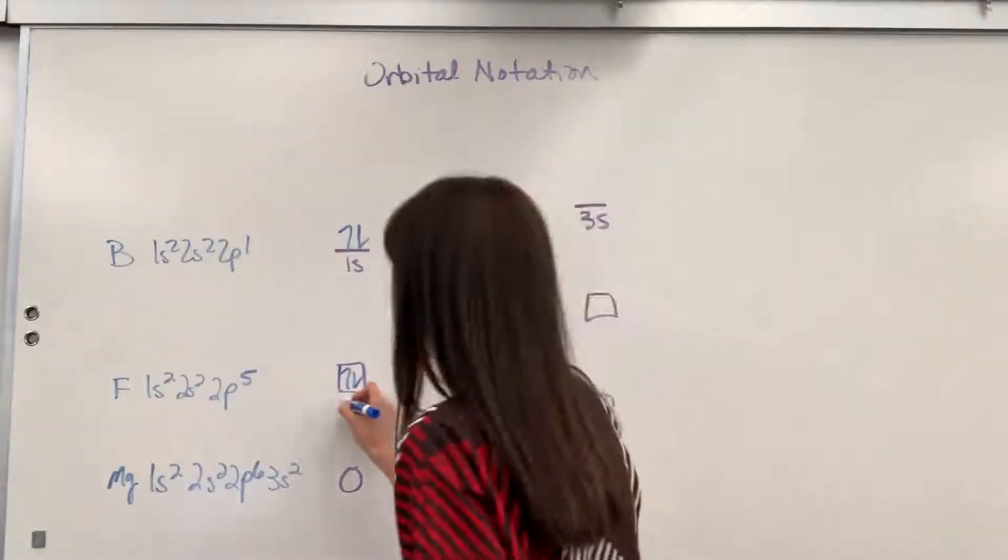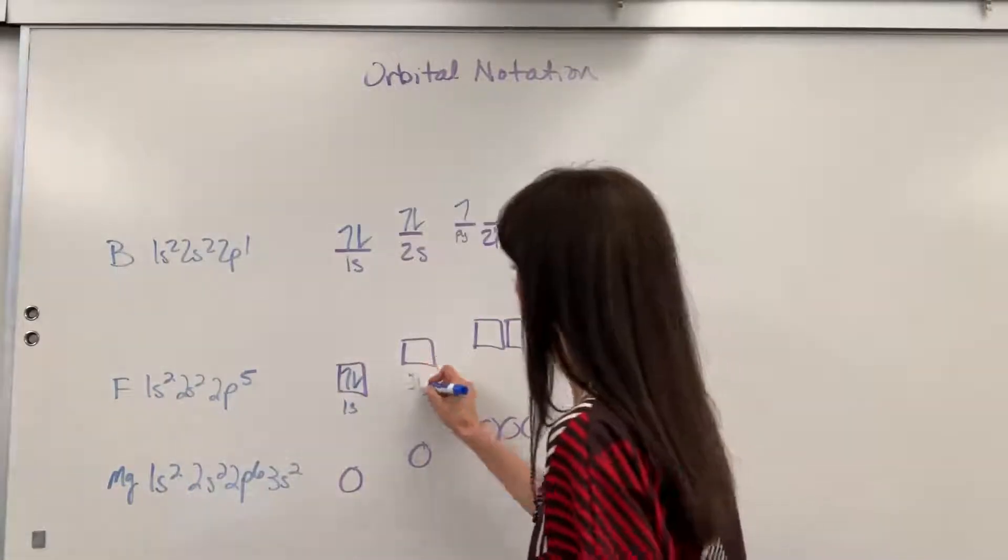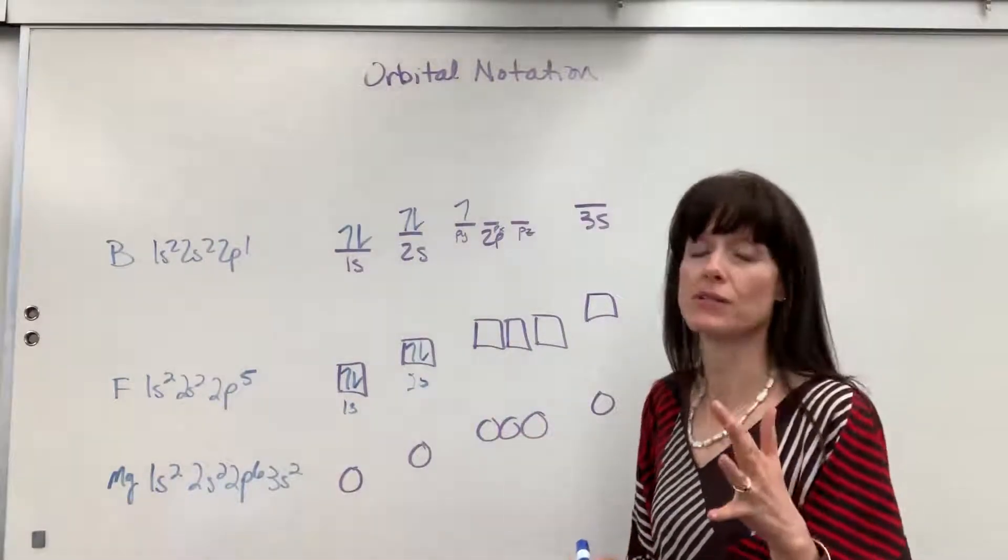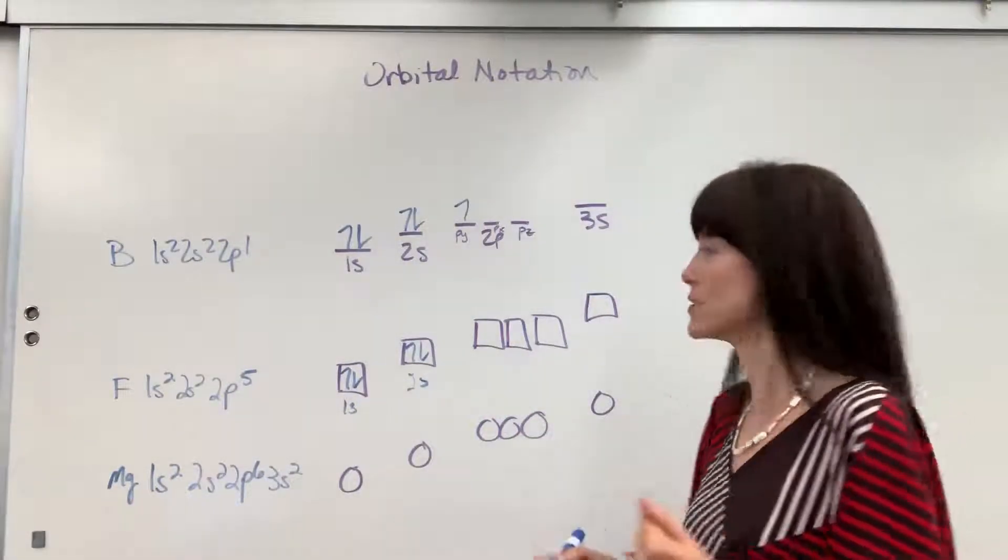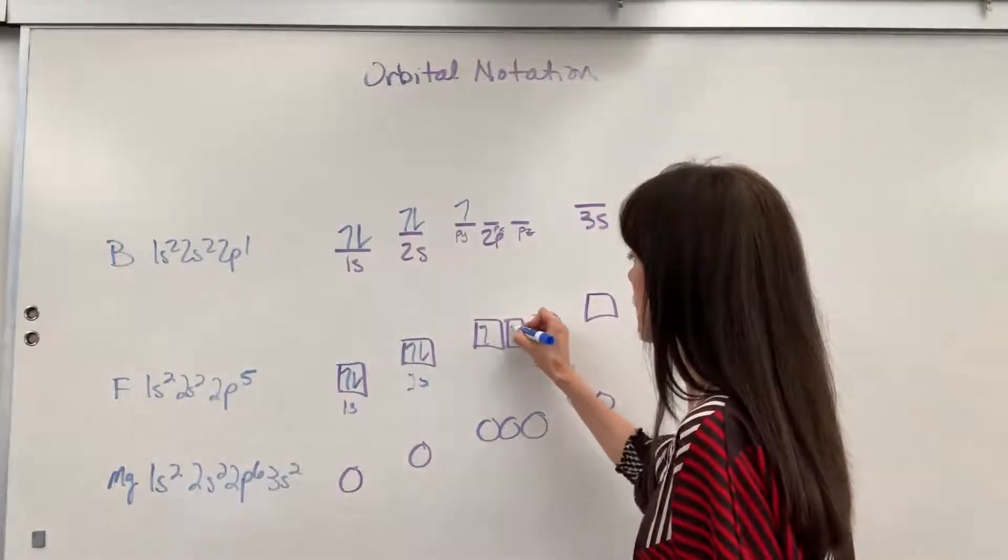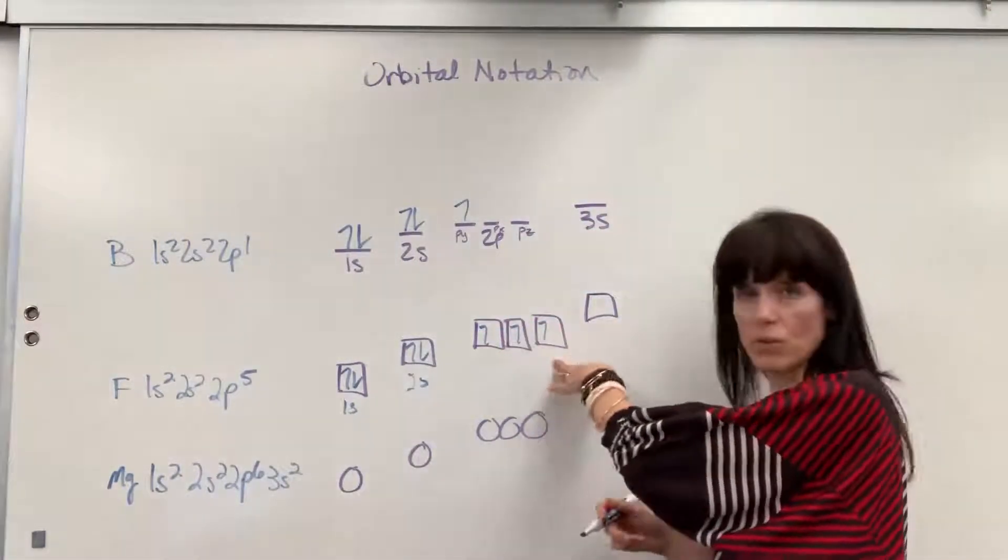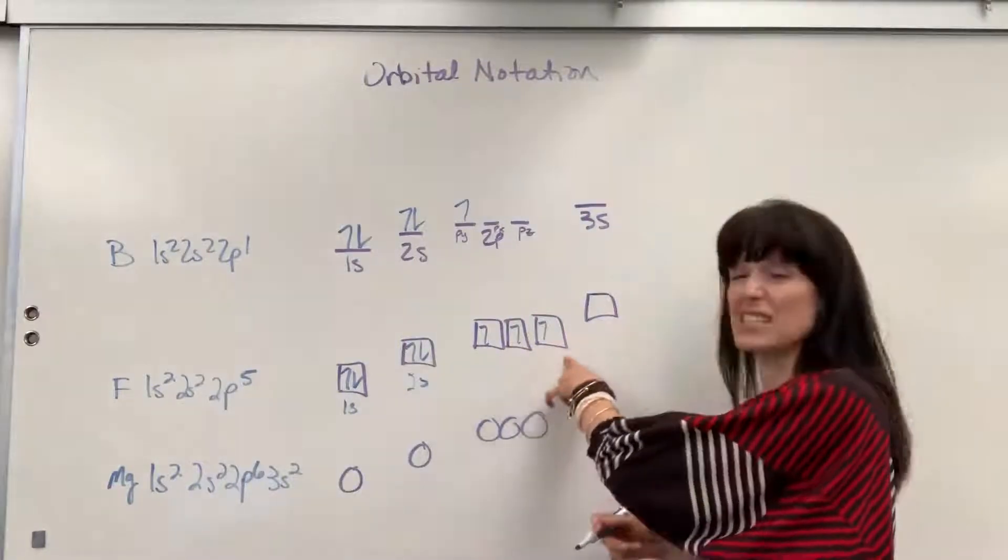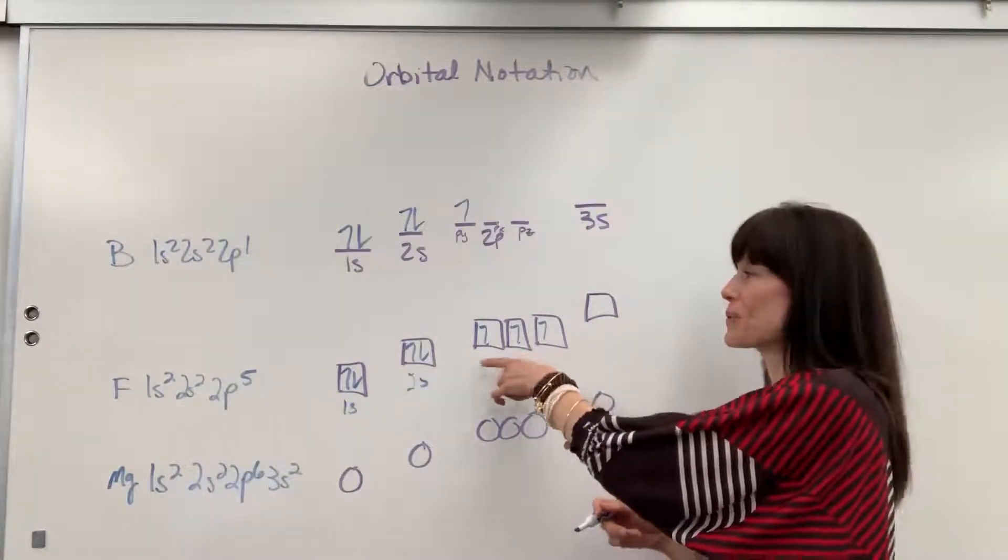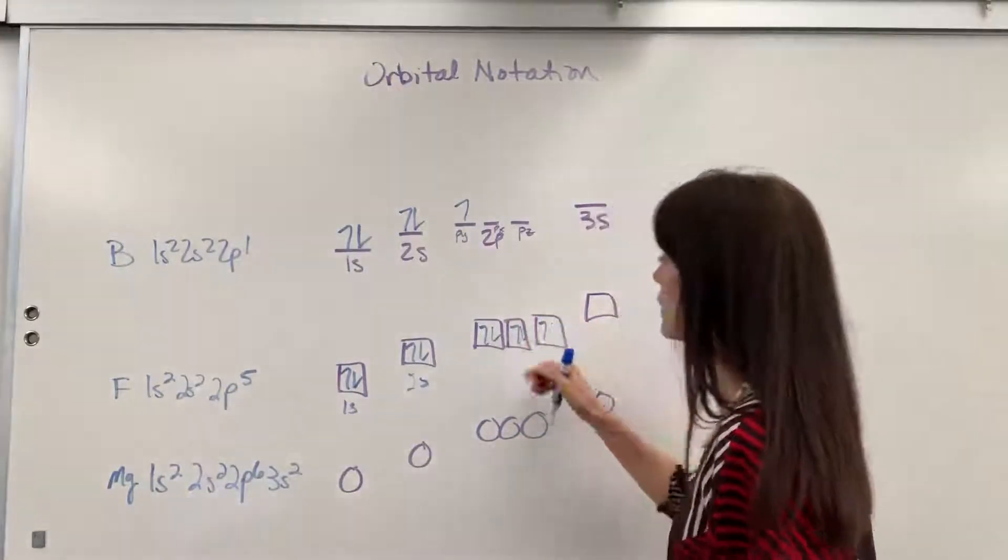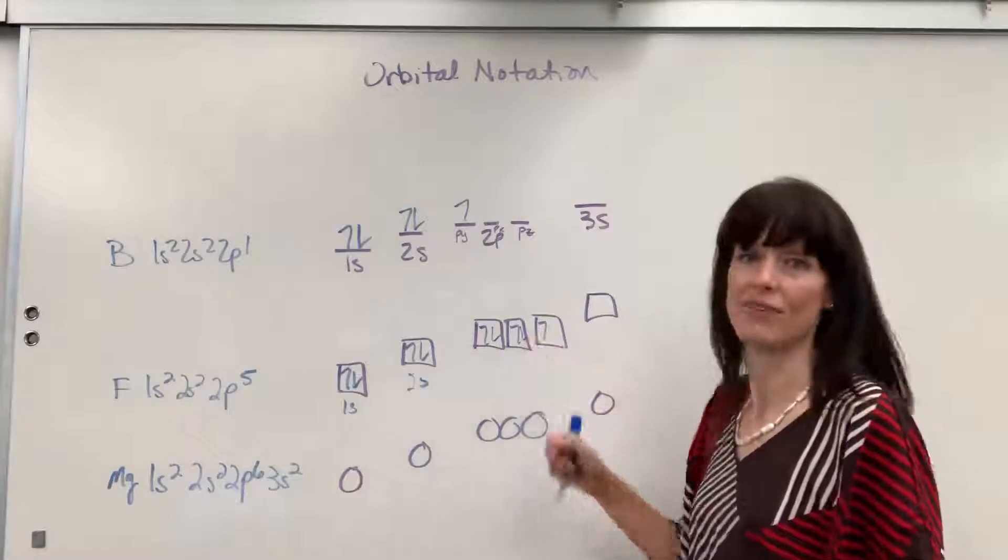Okay, so 1s, then we've got their up and down spin. 2s, two electrons, up and down. And then we've got five electrons. So I'm going to be really careful to follow Hund's rule. I go up, up, up. So each electron has its own orbital. We fill orbitals individually with electrons. Then I go back and double up. Down, down. And there's my 1, 2, 3, 4, 5.